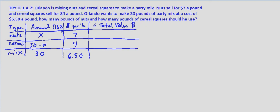So now we simply multiply these together. Amount times the amount per pound. So 7x for the nuts. 4 times 30 minus x for the cereal squares.